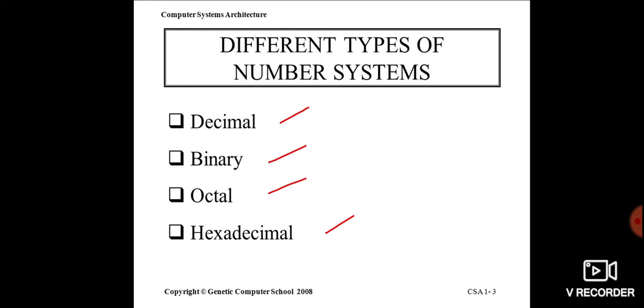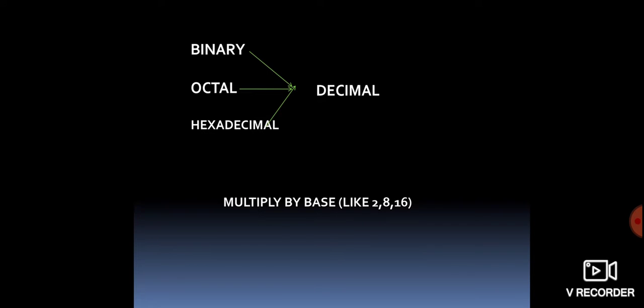There are four types of number system: decimal number, binary, octal, and hexadecimal.